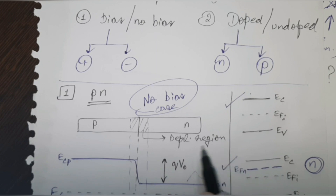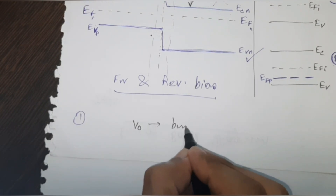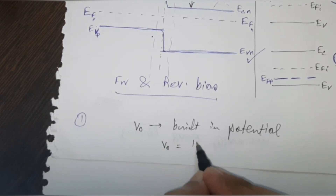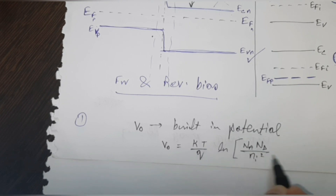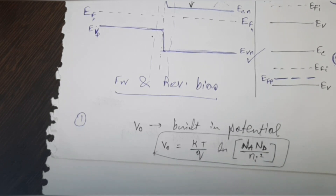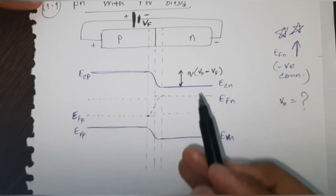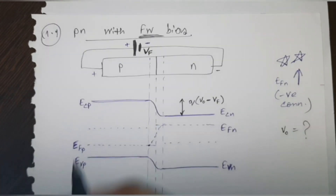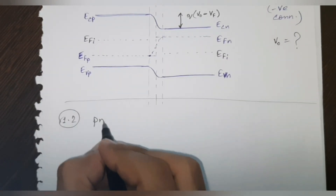The built-in potential V₀ can be expressed by the equation: V₀ = (KT/Q) × ln(Na × ND / Ni²), where ln is the natural log, Na is the acceptor ion concentration in atoms per cm³, ND is the donor ion concentration, Ni is the intrinsic carrier concentration, K is the Boltzmann constant, T is the temperature in Kelvin, and Q is the electronic charge. This built-in potential, along with the applied bias, plays a very important role in knowing the difference between the conduction bands of the two sides.